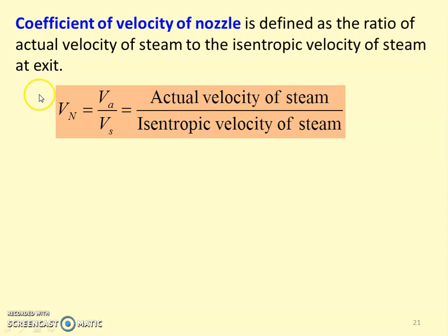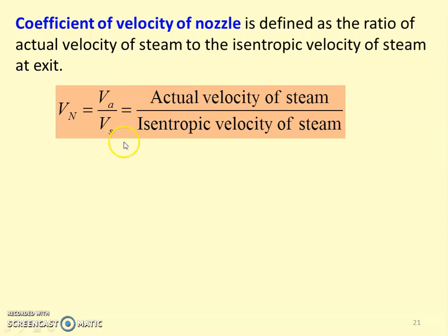We define another parameter: the coefficient of velocity of the nozzle, C_v, defined as the ratio of actual velocity of the steam to the isentropic velocity of the steam at exit — C_v = V_actual / V_isentropic.